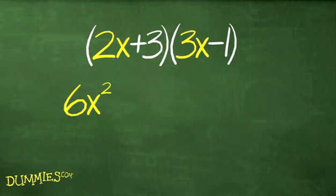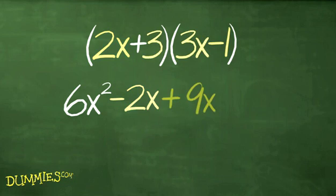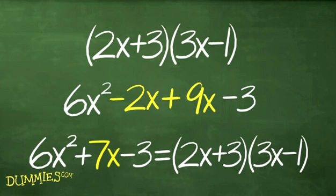First, multiply the first term, the f, of each binomial together. Second, multiply the outer terms together. And third, multiply the inner or I terms together. Fourth, multiply the last term of each expression together. And finally, list the four results of FOIL in order. Now, combine the like terms.